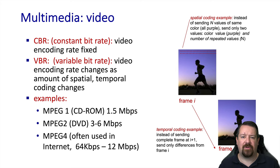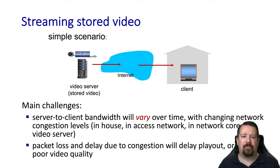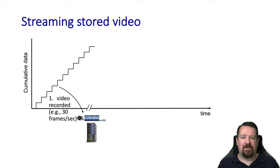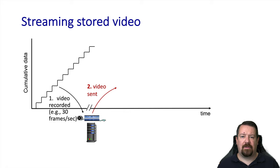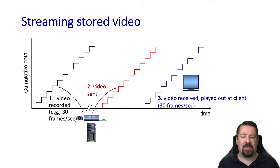Now that we have background on how videos are encoded, let's look at how this works as a network application. Since the internet provides a best-effort service with no reservations, our available bandwidth is going to vary over time while our streaming application is running. We can think about how the video was recorded with new frames being stored 30 times per second, stored on a server. When the client requests to stream this video, the server starts sending it out. While the video can be sent out at approximately the same rate it was recorded, there will be some delay in the network before it arrives at the client, and then the client can start playing it back at the same rate it was recorded.